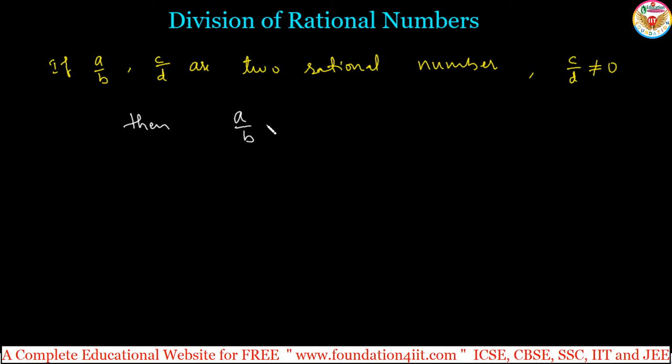a/b divided by c/d, there is one rational number divided by another rational number. That we can write a/b as it is, divided by c/d. If we keep multiplication symbol, now that is nothing but the reciprocal of c/d.